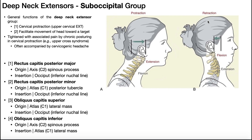The deep neck flexors were responsible for retraction because they flex the upper cervical spine but don't have any action in the lower cervical spine. The cervical spine is divided into two regions: the upper cervical spine consists of the atlanto-occipital joint between the occiput and C1, and the atlanto-axial joint between C1 and C2. All other joints from C2-C3 down are the lower cervical spine. The deep neck extensors facilitate extension only of the upper cervical spine — they don't have any action at the lower cervical spine.